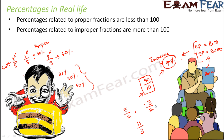For example, 3/2 corresponds to 150%, and 5/2 corresponds to 250%. So all of these improper fractions give percentages more than 100.